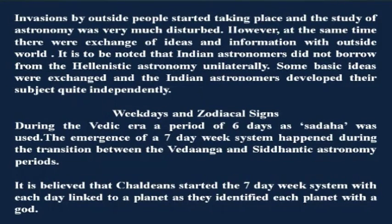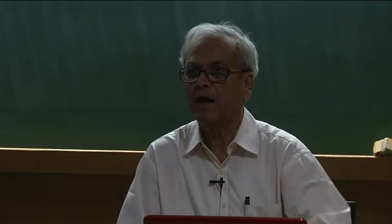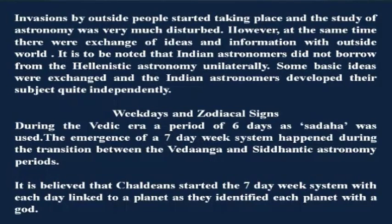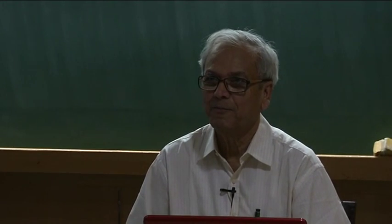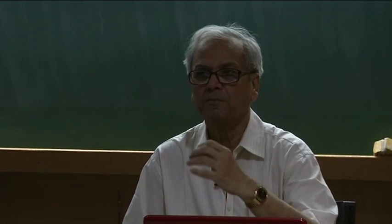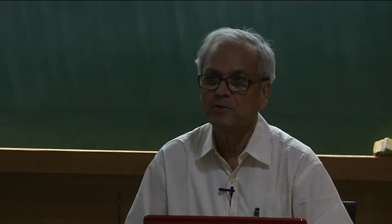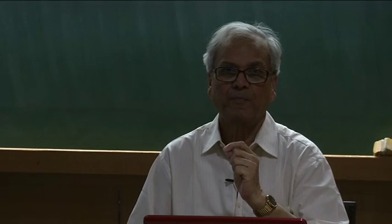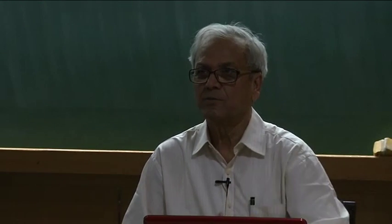Surprisingly, the names of the zodiacal signs were very similar to those found in Hellenistic astronomy. In the Vedic era there was a Shadaha - a week of 6 days - and the emergence of the 7-day week system happened during the transition between Vedanga and Siddhantic astronomy. It is believed the Chaldeans started the 7-day week system. The reason for 7 days is that there are 7 planets: Sun, Moon, Mercury, Venus, Mars, Jupiter, and Saturn. Each planet was associated with a god and the 7 days were based on these 7 planets and 7 gods.